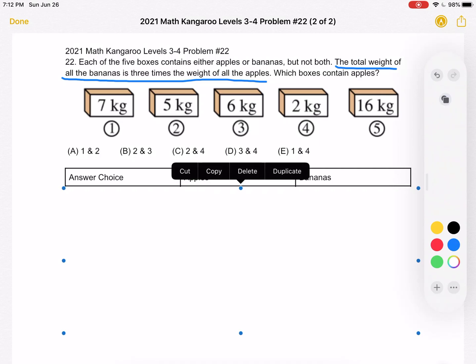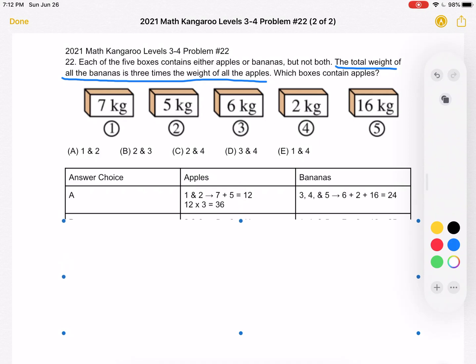Let's start with answer choice A, which is 1 and 2. If we have 1 and 2 as the boxes that contain apples, box 1 has 7, plus box 2 holds 5. So we would have a total of 12 apples.